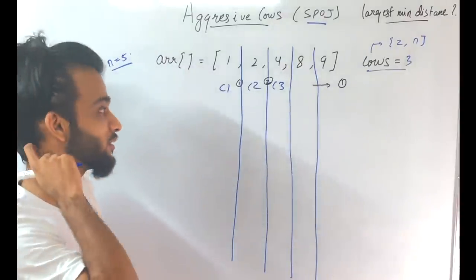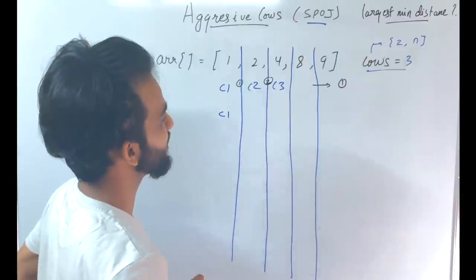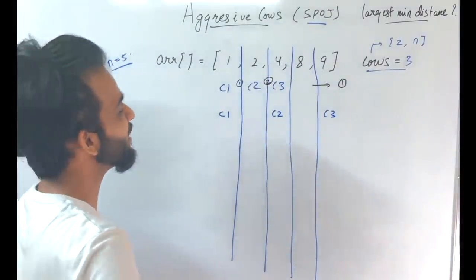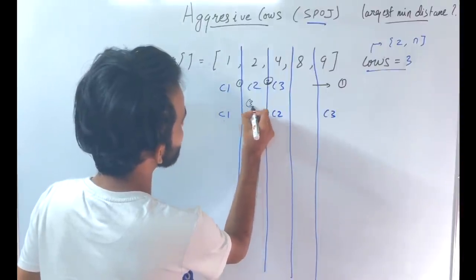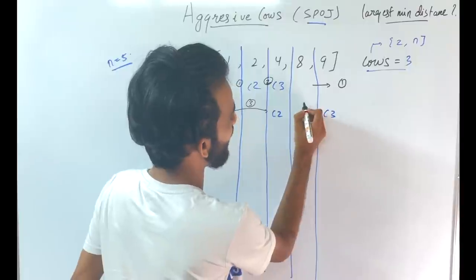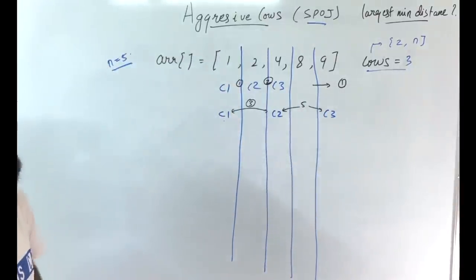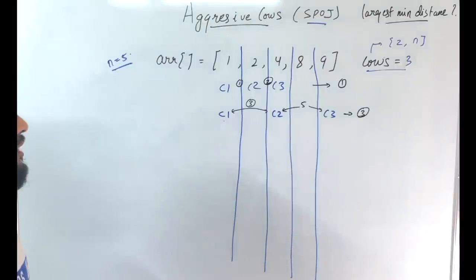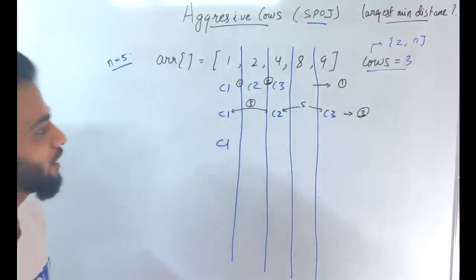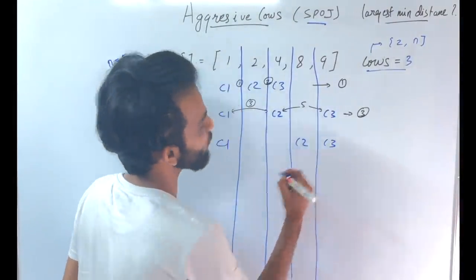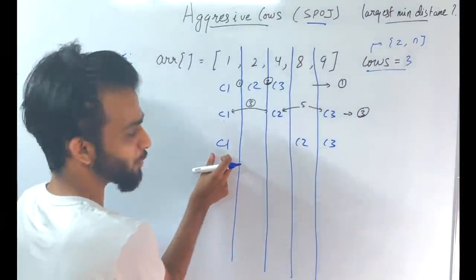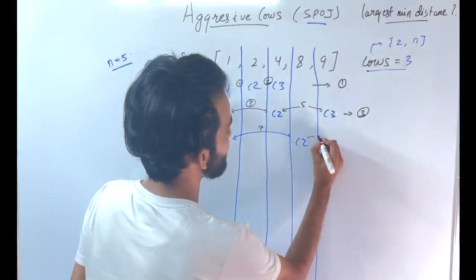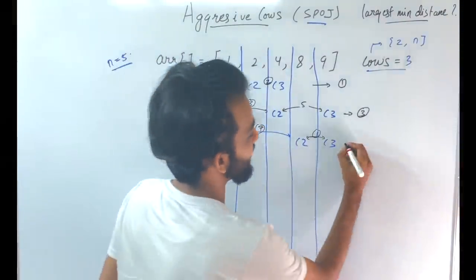Let's try another configuration. C1 placed here, C2 placed here, C3 placed here. The difference between this cow and this cow is 3, and the difference between this cow and this cow is 5. Hence the minimal among them is 3. Another configuration: C1 here, C2 here, C3 here — distance 7 and distance 1, so the minimal is 1.